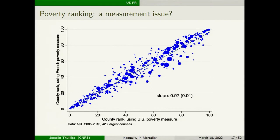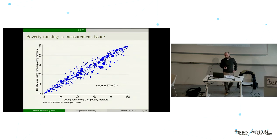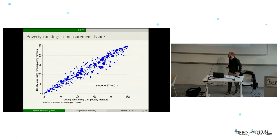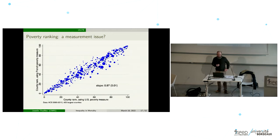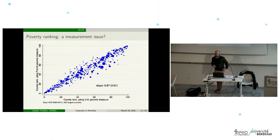Poverty measurement differs between France and the US: in France and Europe it is defined as 60% below the median income of the country, while in the US it is basically an absolute threshold. What we can do is compare the US ranking using the French definition of poverty — comparing the absolute threshold with the relative definition. When we do that, we still find a very high correlation of 0.97, showing a very straight line and therefore saying that measurement issues are not so important for poverty here.